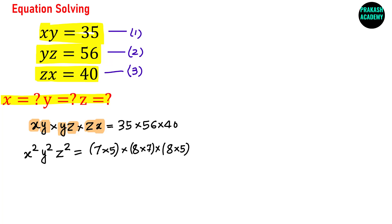Now I will use a rule of exponents. If you remember, if you have a raised to the power m and b raised to the power n, then this can be written as (ab) raised to the power mn. This is the rule of exponents and I will apply it here.